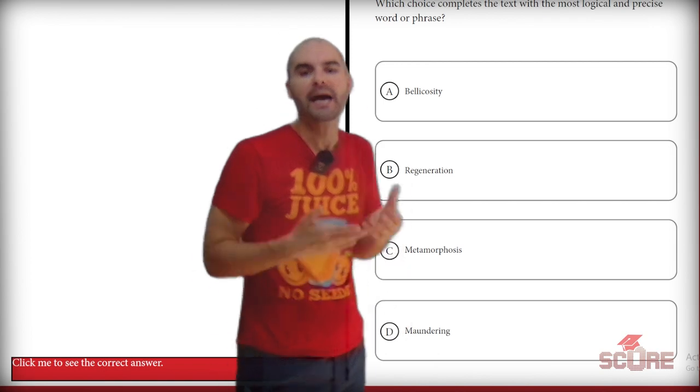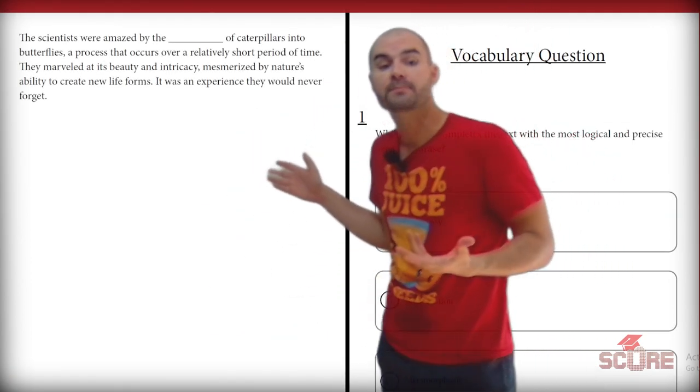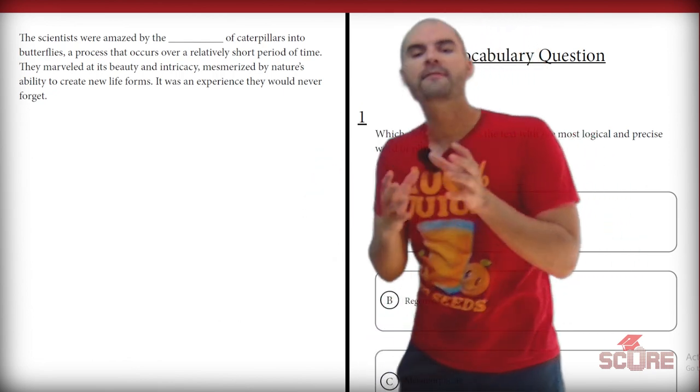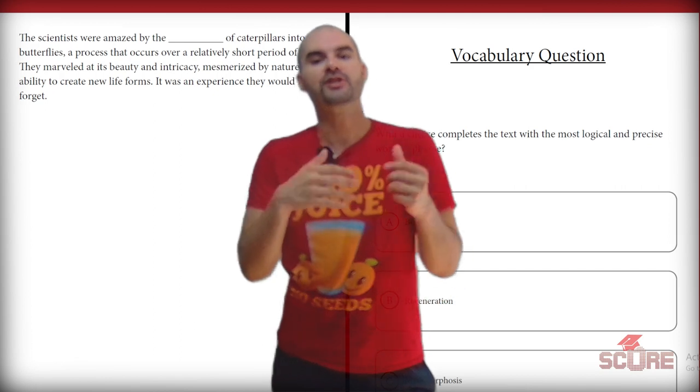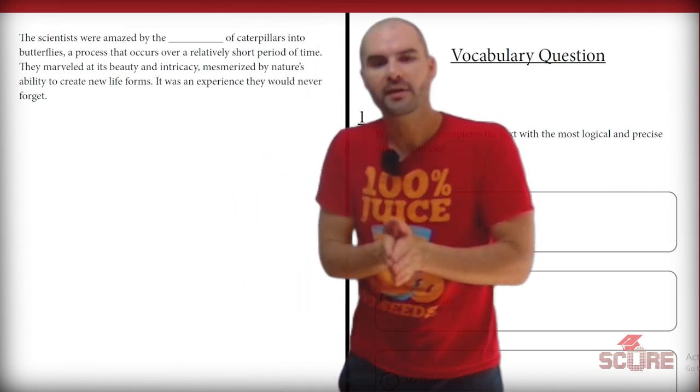If I'm stuck between B and C, I can just read ahead a little bit and take a look at the next sentence, which says they marveled at its beauty and intricacy, mesmerized by nature's ability to create new life forms. New life forms implies metamorphosis. Regeneration would just be the same life form. So I know I could mark C. Let's move on.